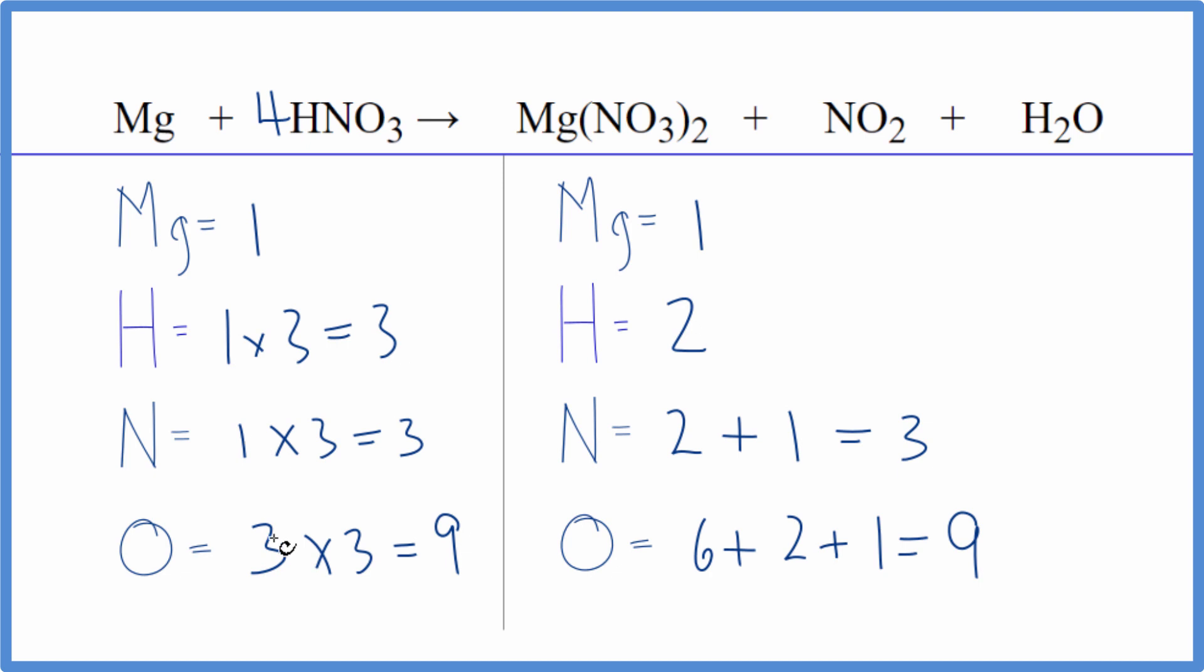And then we need to update all these numbers here. So now we have one times four, four hydrogen atoms, one times four, four nitrogens, three times four, 12 oxygen atoms. Now that this is an even number, if we just put a two in front of the NO2, that would change the nitrogens and the oxygens. Let's update those.